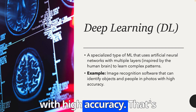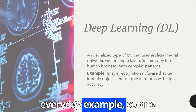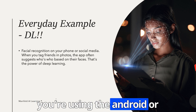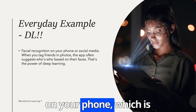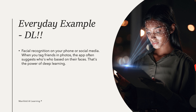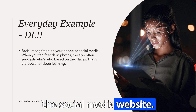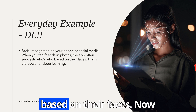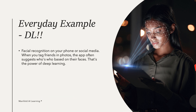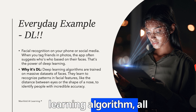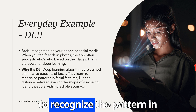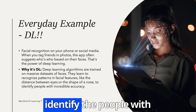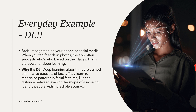An example of deep learning is image recognition software that can identify objects and people in photos with high accuracy. An everyday example is facial recognition on your phone — whether Android or iOS — which detects your face to unlock your device. Social media websites also use deep learning: when you tag friends in photos, the app suggests who is who based on their faces. Deep learning algorithms are trained on massive datasets of faces and learn to recognize patterns in facial features, like the distance between the eyes and the shape of the nose.